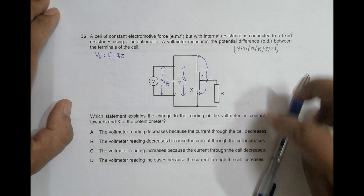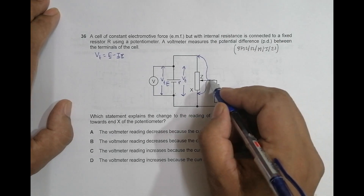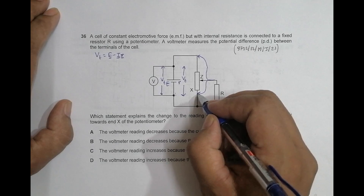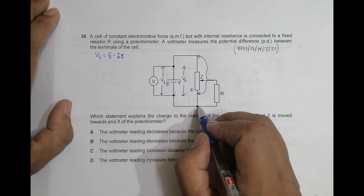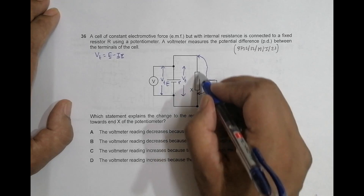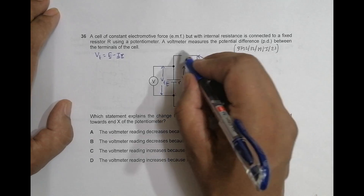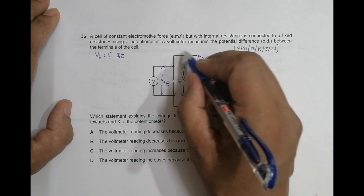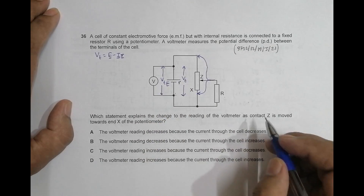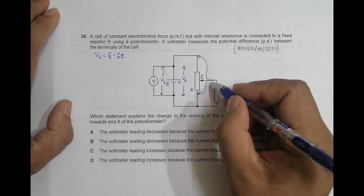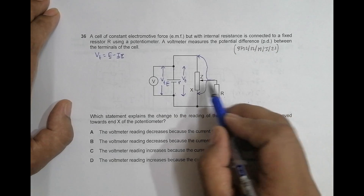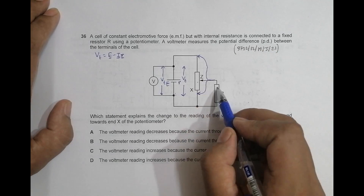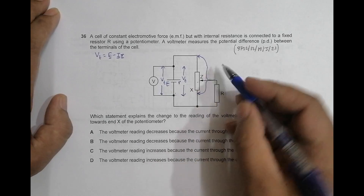Let's first assume that this parallel branch is not there and I bring the contact to one end. In that case current will only flow through the main branch, so only resistor R remains in the circuit. But when the contact is at the other end, we have an additional resistor in parallel with R.